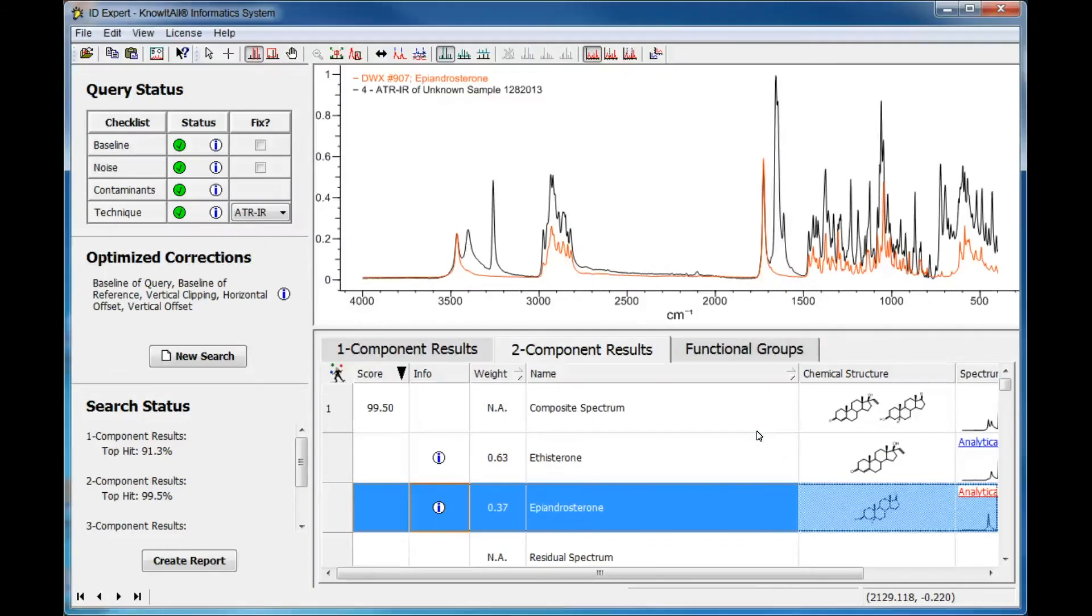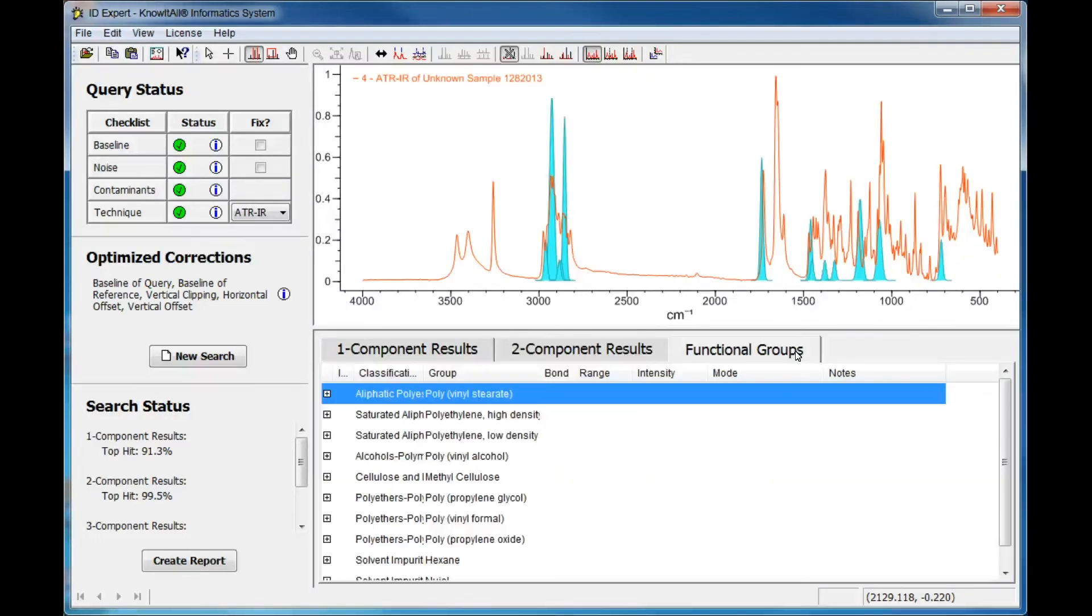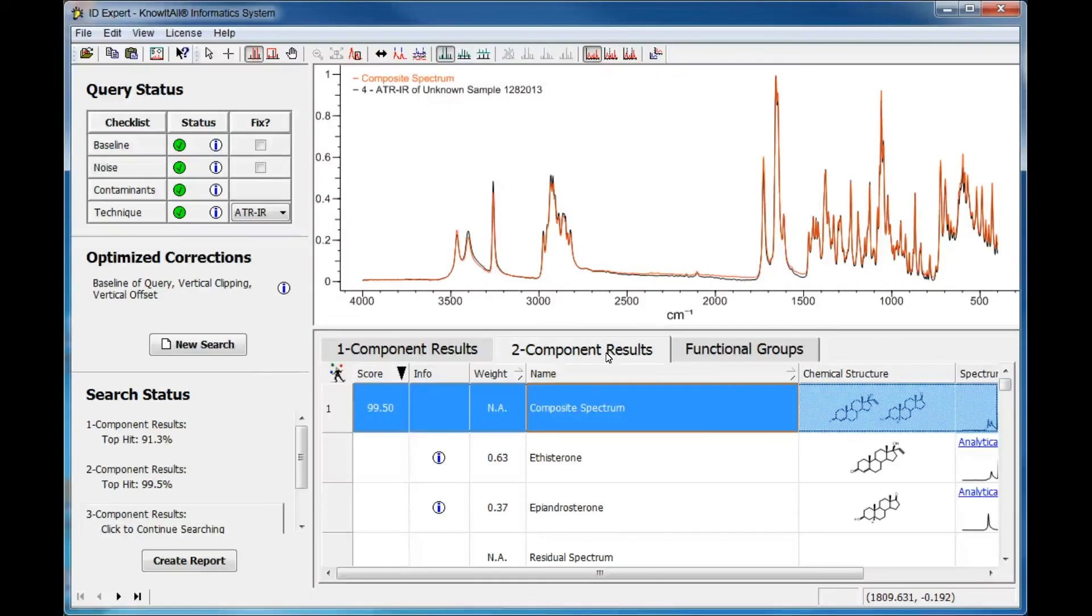Additionally, you can view the Functional Group Analysis tab results to verify or further classify your spectrum. Once you are satisfied with your results, you can create a PDF report.